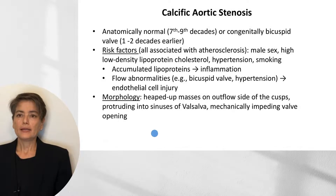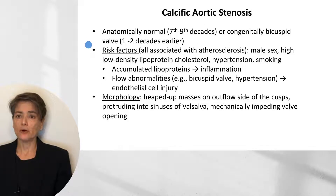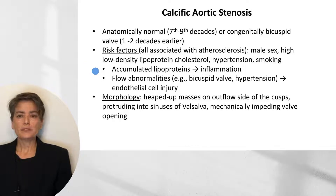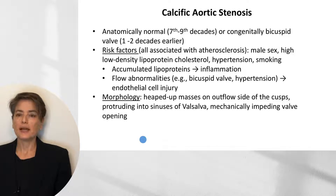The most important form is calcific aortic stenosis, seen in anatomically normal individuals in the seventh to ninth decades. Individuals with a congenital bicuspid aortic valve present one to two decades earlier due to abnormalities in flow. Risk factors mirror those for atherosclerosis: male sex, high LDL cholesterol, hypertension, and smoking. Accumulated lipoproteins lead to inflammation, and combined with flow abnormalities such as in a bicuspid valve or hypertension, lead to endothelial cell injury and further atherosclerotic change.